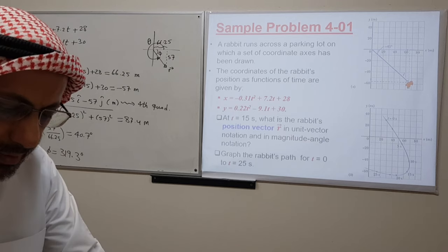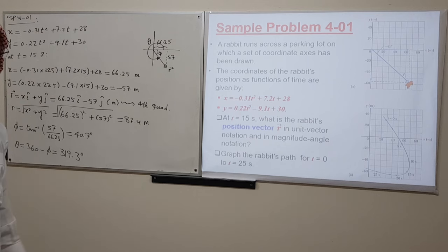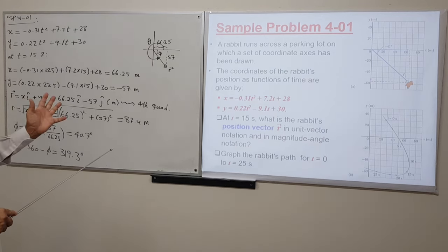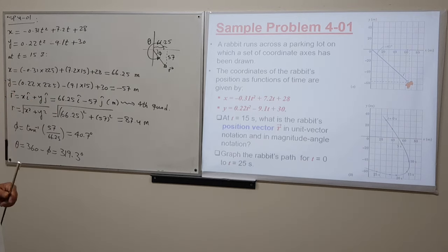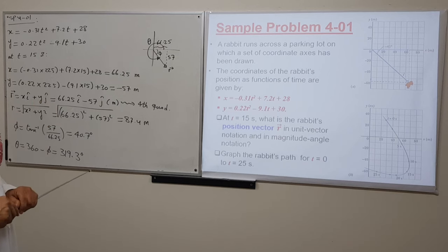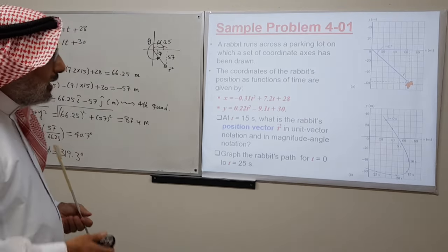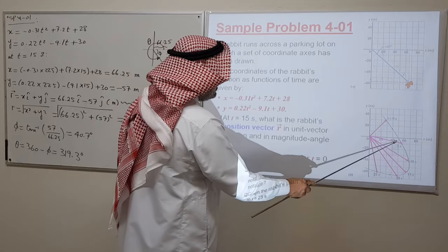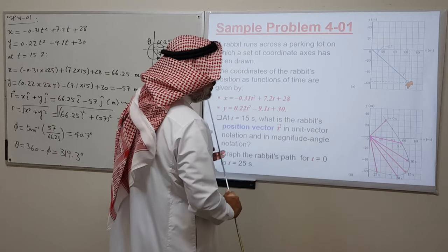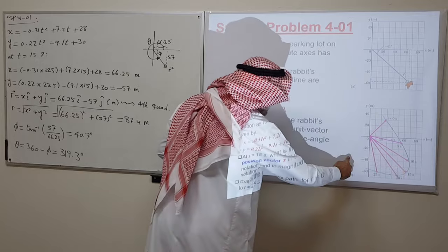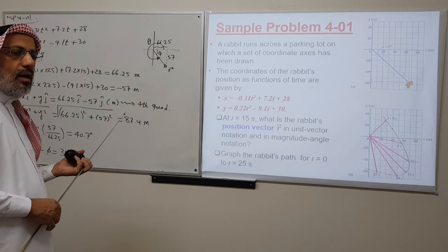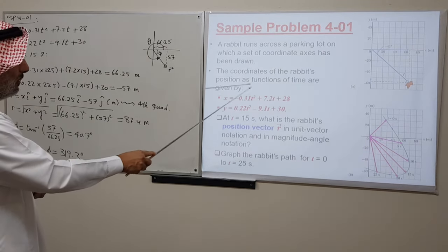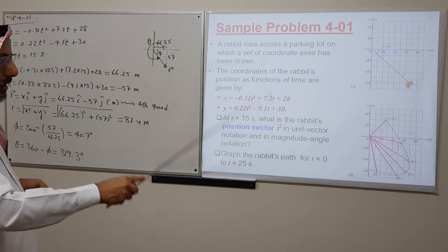The second part asks to graph the rabbit's path for t = 0 to t = 25 seconds. You substitute t = 0, 1, 2, ... 25 into the position equations to get the coordinates at each time — a computer program like Excel will speed this up. Plotting these gives position vectors at t = 0, 5, 10, 15, 20, 25 seconds. The path is the curve connecting the tips of these arrows, which is the trajectory of the rabbit.